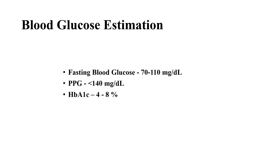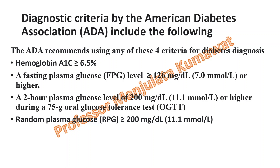HbA1c, that is glycosylated hemoglobin, reflects the mean blood glucose concentration of the preceding 8 to 10 weeks, or the last 2 to 3 months. Its normal value should be 4 to 8 percent. It is also very important to know the diagnostic criteria given by the American Diabetes Association (ADA), which recommends using any one of four criteria for diagnosing diabetes.